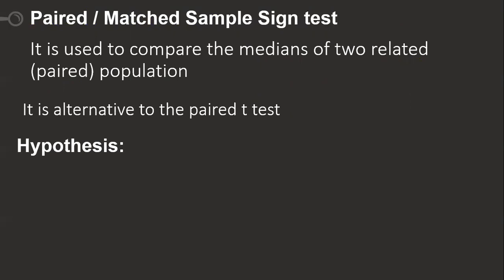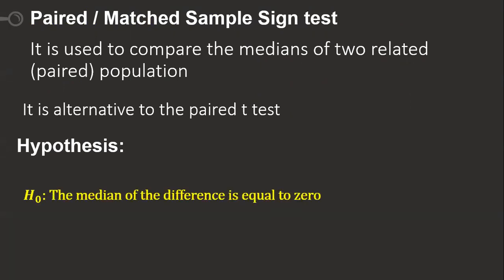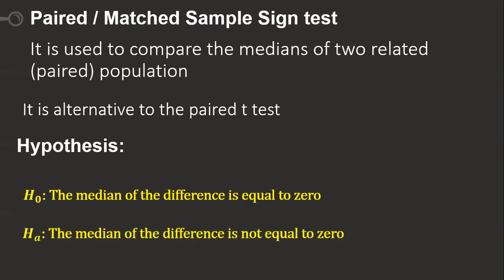The hypothesis is taken simply: the null hypothesis is that the median of the difference is equal to zero, meaning the medians are equal. The alternative hypothesis is that the median of the difference is not equal to zero. You can change and fit this hypothesis as per your convenience.